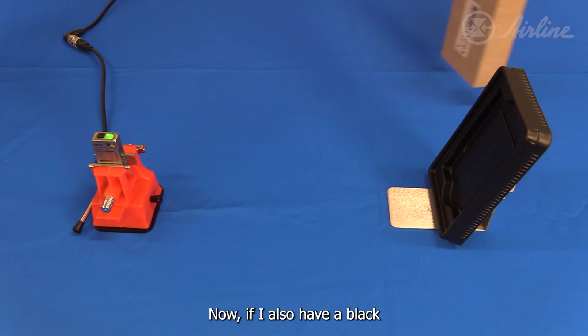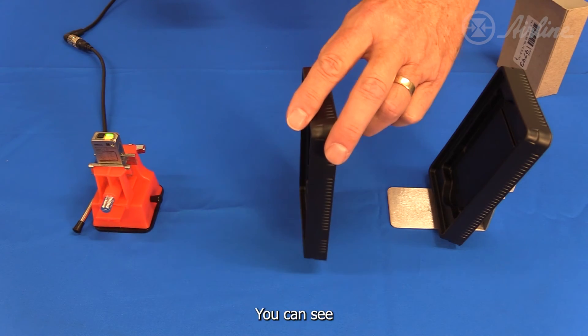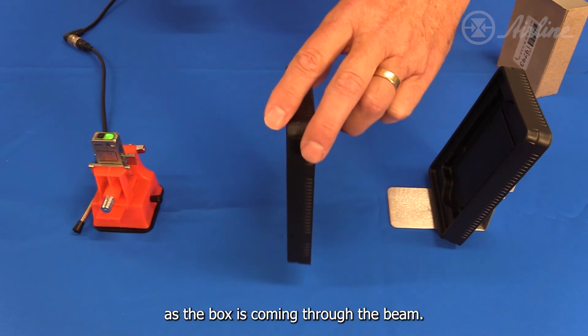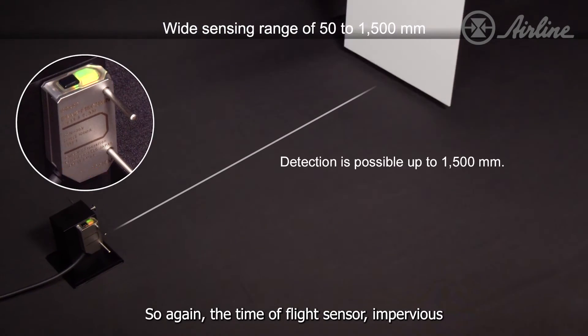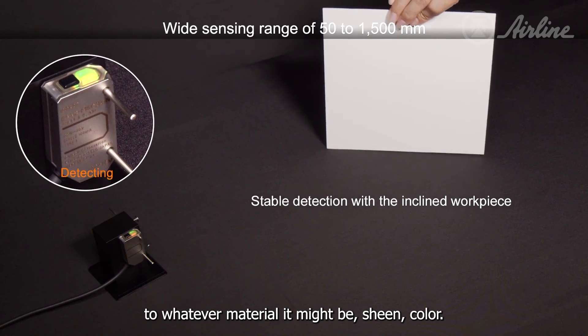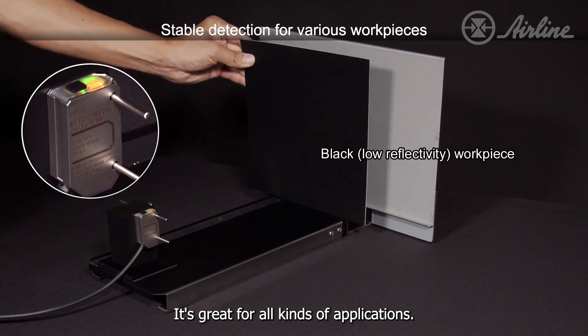Now if I also have a black coming through, again should not matter, right? You can see my sensor is activating as the box is coming through the beam. So again, the time-of-flight sensor is impervious to whatever material it might be, sheen, color - it's great for all kinds of applications.